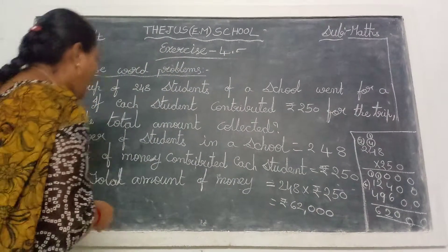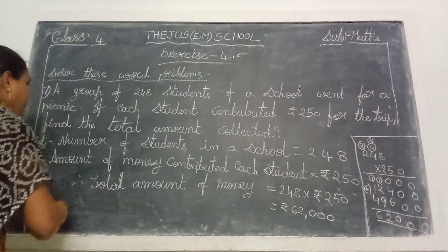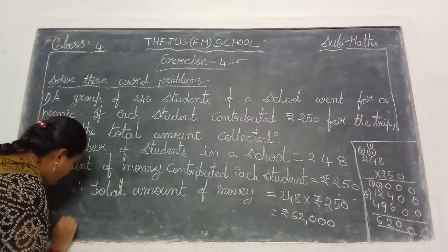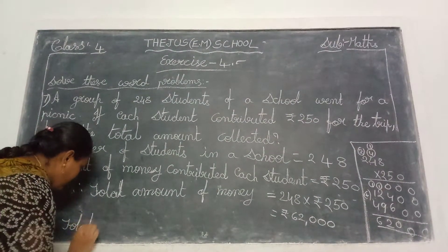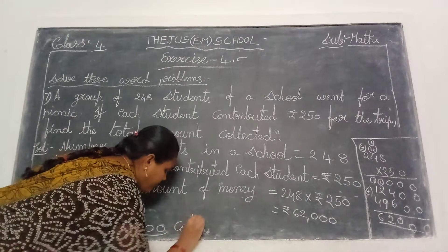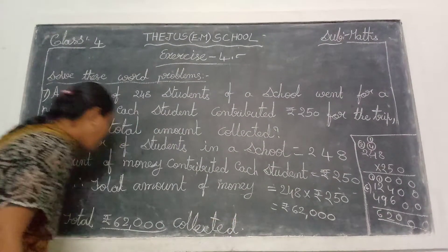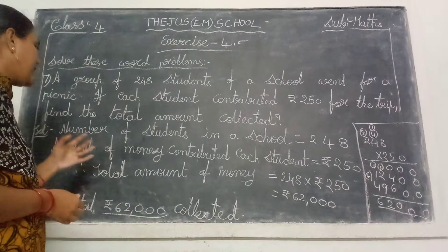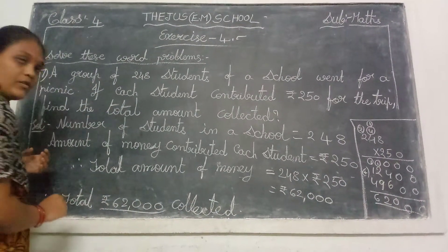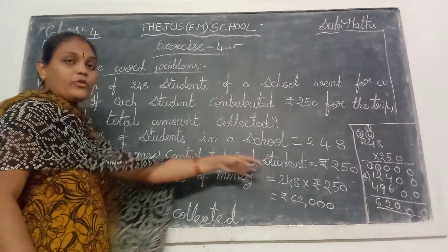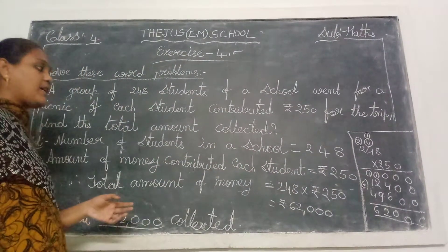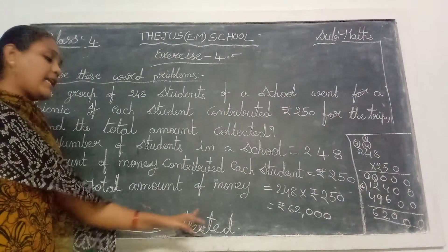Write the rupees symbol also. Find the total amount collected — total: 62,000 rupees collected. First, how many students are there — each student, how much amount was contributed. Amount contributed by each student: 250 rupees. Total amount of money: 248 students into 250 rupees equals 62,000 rupees. Total 62,000 rupees collected.